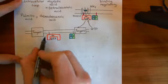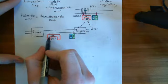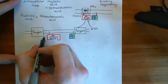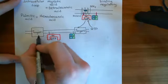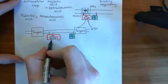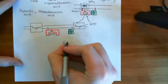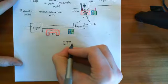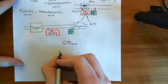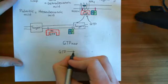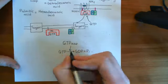When the alpha subunit binds to its target, it activates or regulates that target. Importantly, all alpha subunits are enzymes — they are GTPases that have the ability to hydrolyze GTP. So the alpha subunit can break down GTP into GDP and an inorganic phosphate.